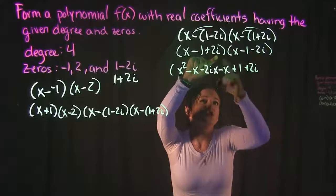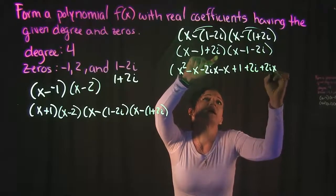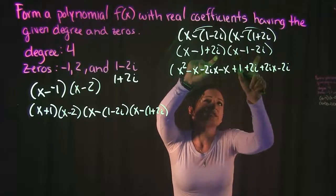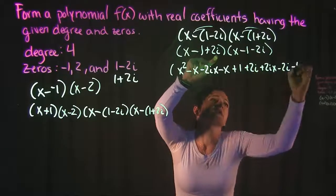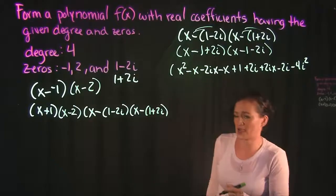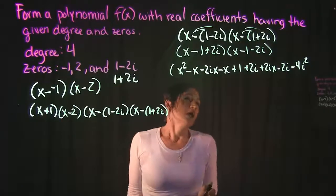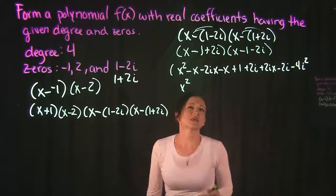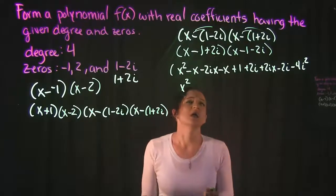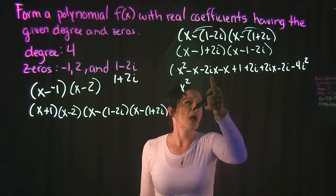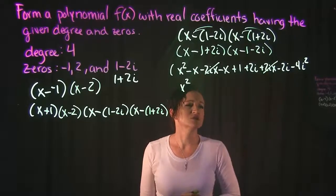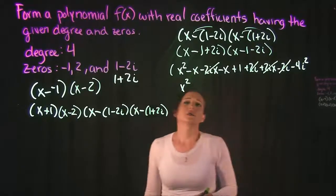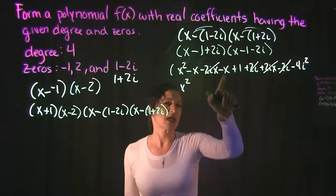2i times everything. 2i times x is 2ix. 2i times negative 1 is a negative 2i, and 2i times negative 2i gives us a negative 4i squared, which we'll simplify in just a bit. Let's try and combine some like terms. Dropping down the x squared since there's no other x squared. I see that I have a negative 2ix and a positive 2ix. Those cancel. I have a 2i and a negative 2i. Those cancel. I have a negative x and a negative x. So negative x plus a negative x is a negative 2x.